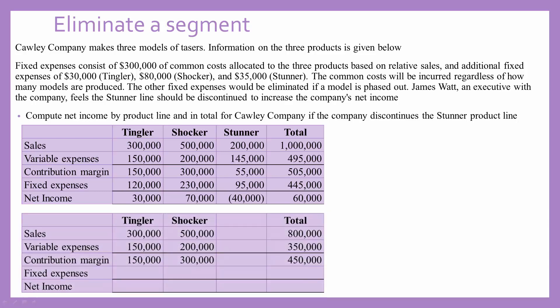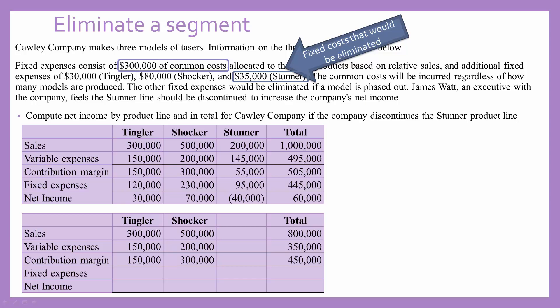If we eliminate the Stunner line, we're going to lose all of the sales from that line plus all of the variable costs. The problem also tells us that we would lose $35,000 of fixed costs that are directly belonging to the Stunner line. However, there's still $300,000 of common costs that need to be allocated to our two remaining products. Since the problem tells us that the costs are allocated based on relative sales, we need to do the calculation to reallocate those costs.